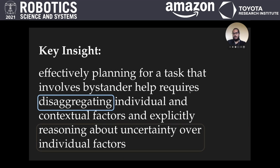Second, let's consider why it's important to explicitly reason about the uncertainty over individual factors. As I mentioned earlier, the individual factor we consider is the human's latent helpfulness, which is unobservable. However, it can be inferred from repeated interactions with the same person. By explicitly reasoning about its uncertainty over latent helpfulness, the robot can take information-gathering actions and gradually converge its belief of the human's latent helpfulness.